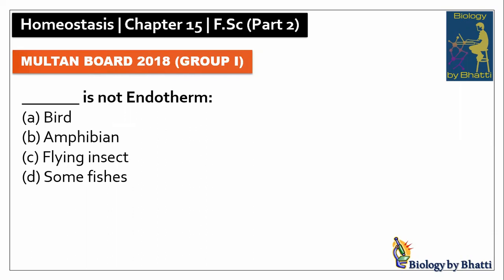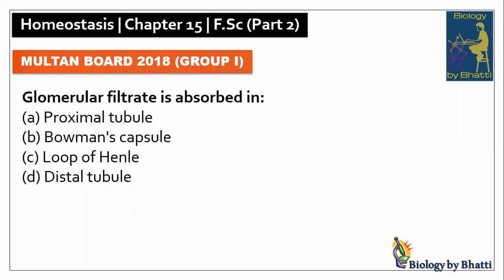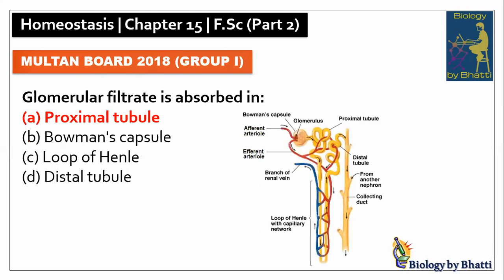Multan Board 2018 Group 1: amphibians are not endotherms — they are ectotherms, so the answer was B option. In this paper, the glomerular filtrate is absorbed in the proximal tubule, so the answer was A option.